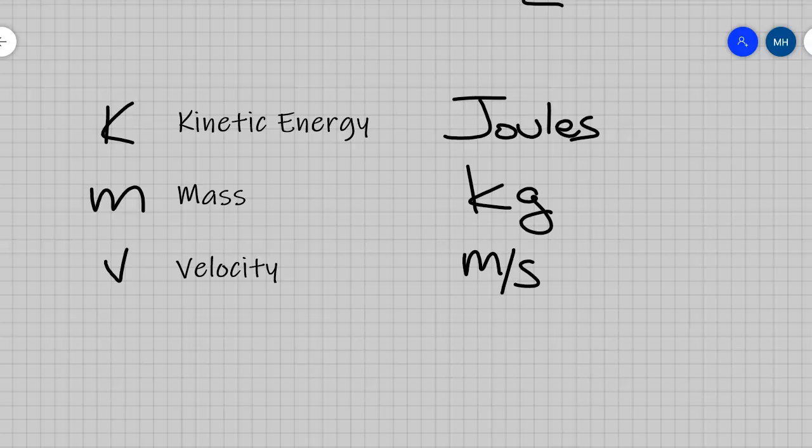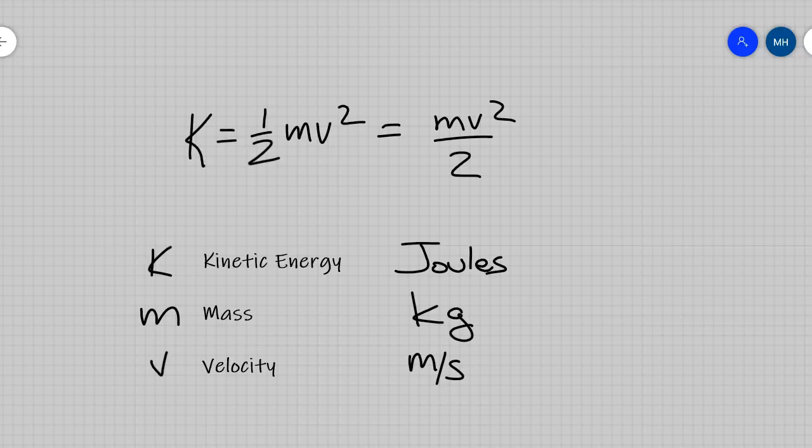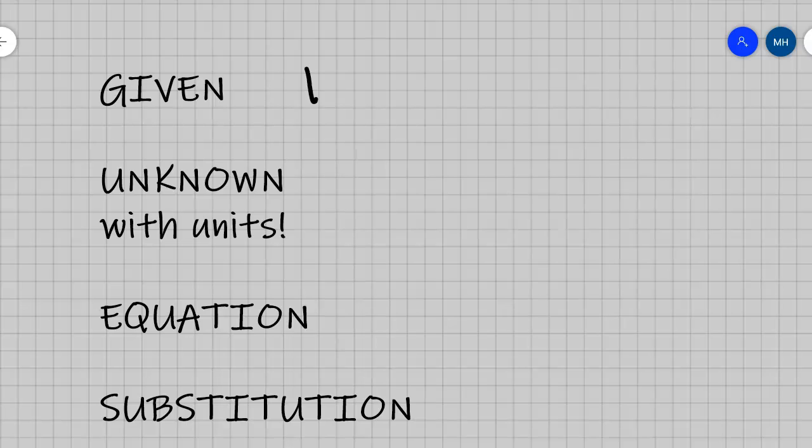Okay, so those are the symbols, what they mean, and the units you need with this formula. Let's think about a problem. We have a mass of four kilograms traveling at seven meters per second. A four-kilogram mass is traveling across a field at seven meters per second. What is the kinetic energy?